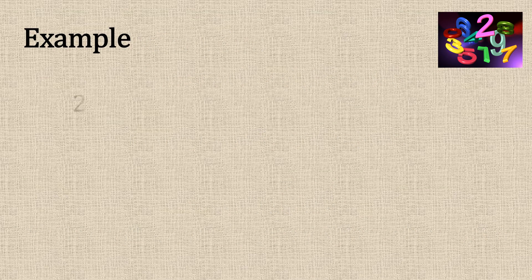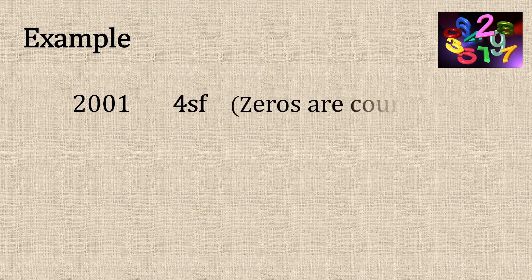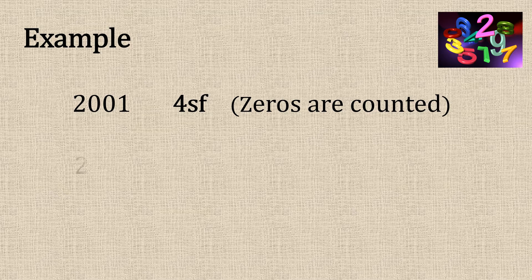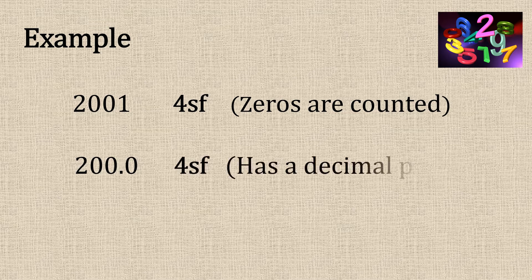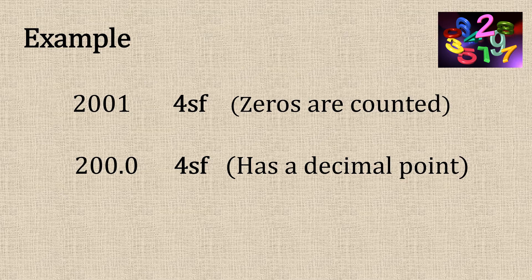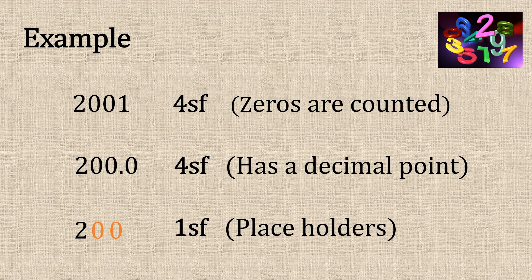An example. 2001 has four significant figures because the zeros are counted. 200.0 also would have four significant figures because it has a decimal point. And then 200 would only actually have one significant figure. But the other two zeros we leave for placeholders to hold the value of the number.